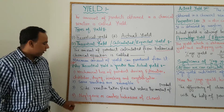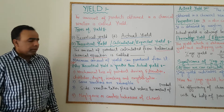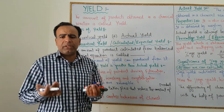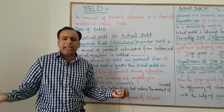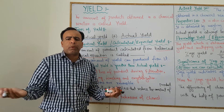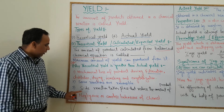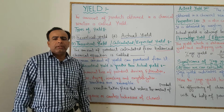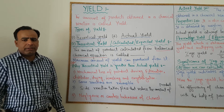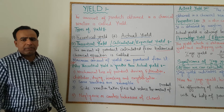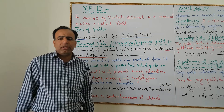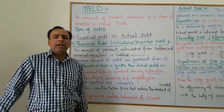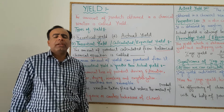The second reason is that sometimes the reaction will be reversible — the reaction will be reversed — and we cannot obtain the full actual yield. Reason number three: side reactions take place, and when side products are produced during a chemical reaction, they reduce the amount of the required product.